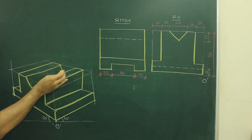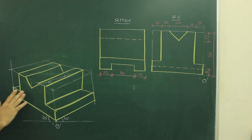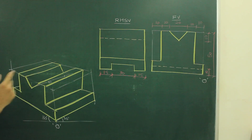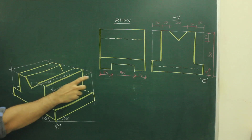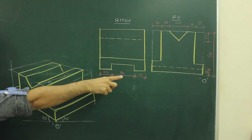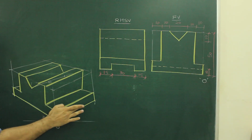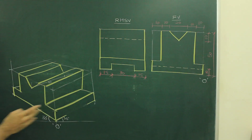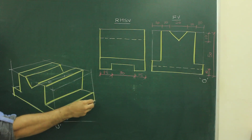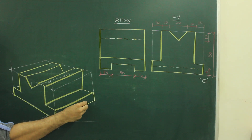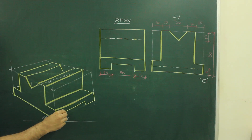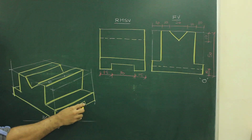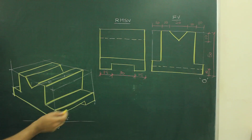We don't have to show this inside part, so we are done with this much portion. Now if you see the side view, they have given a slot — 15, 30, 15 and height is 10. So I need to draw that slot over here. I will take 15 from here, 15 from here, go up by 10, join and draw this. So we are done with it.